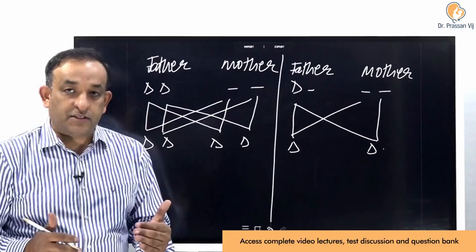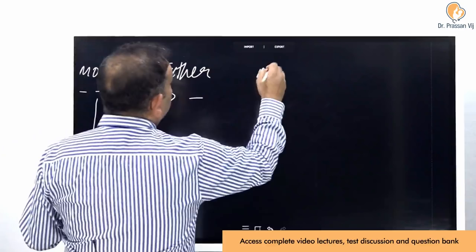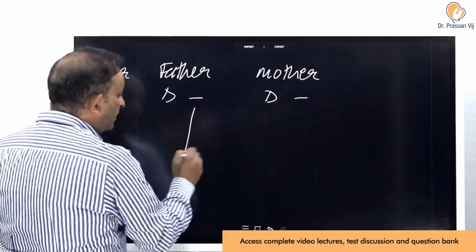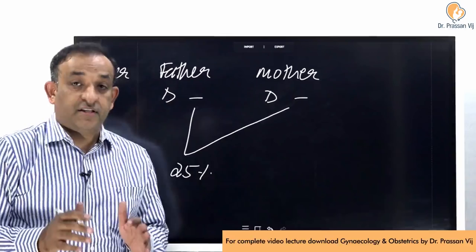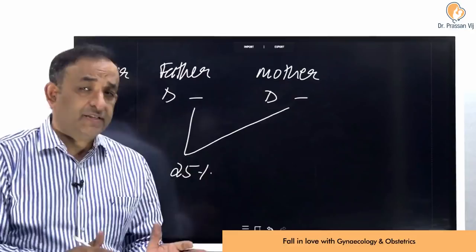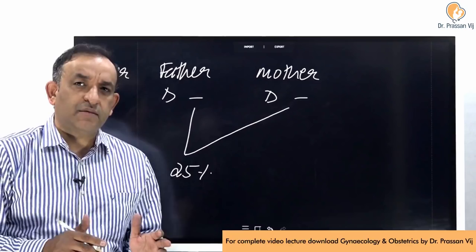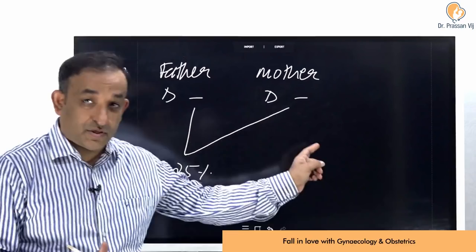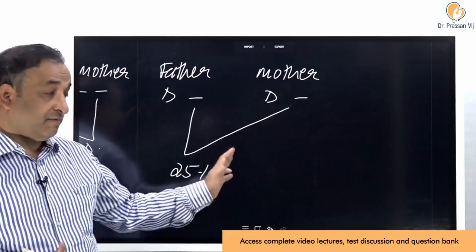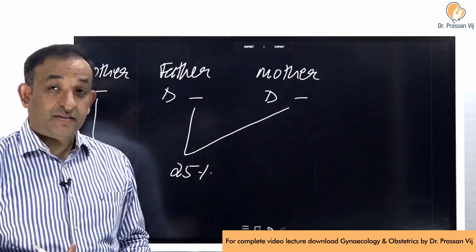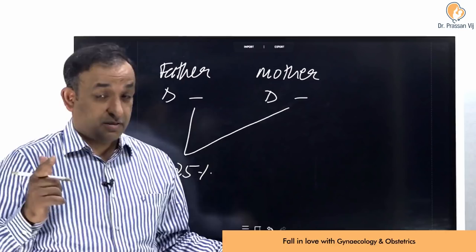If the father is positive and the mother is also positive, can the baby be negative? Yes — that can happen if both the father and mother are heterozygous positive. In that combination, 25% of babies can be negative. And if the father is negative and the mother is negative, can the baby be positive? No, that cannot happen — if it does, that is a much bigger problem entirely.